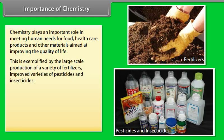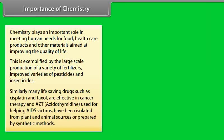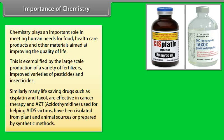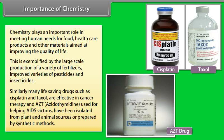This is exemplified by the large-scale production of a variety of fertilizers, improved varieties of pesticides and insecticides. Similarly, many life-saving drugs such as cisplatin and taxol are effective in cancer therapy and AZT Zidothymidine, used for helping AIDS victims, have been isolated from plant and animal sources or prepared by synthetic methods.